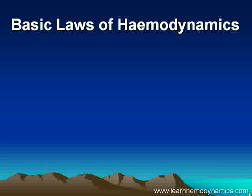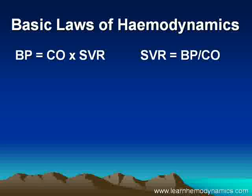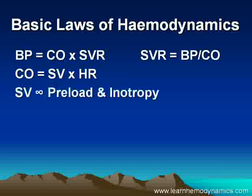Now there are a few basic laws we need to start with in hemodynamics — you learned all of these in the first year of med school. Blood pressure is simply cardiac output times systemic vascular resistance. Systemic vascular resistance is therefore blood pressure over cardiac output. Cardiac output is the product of the stroke volume times the heart rate. Stroke volume is proportional to the preload and the inotropy. If preload goes up or inotropy goes up, then stroke volume will also go up and vice versa.